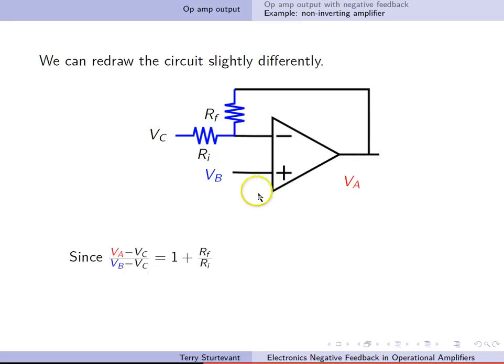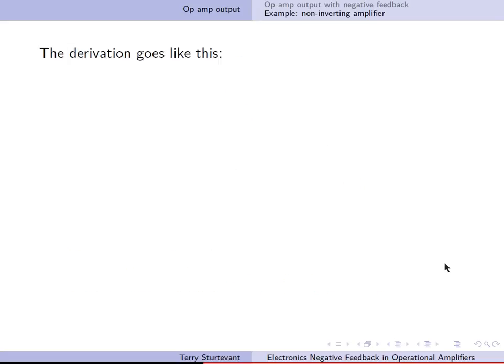So since VA minus VC, since we have this relationship, then we can rewrite it to show that VA minus 1 plus RF over RI times VB equals minus RF over RI times VC.